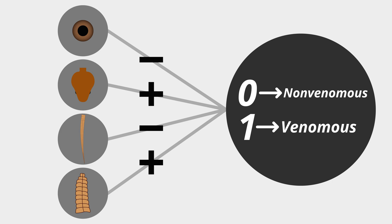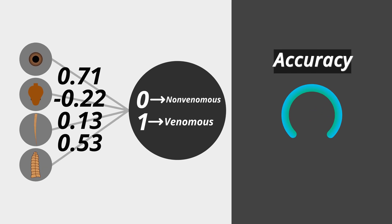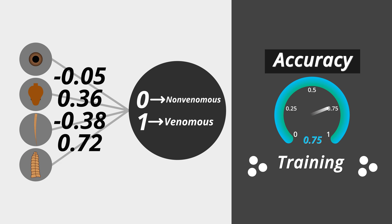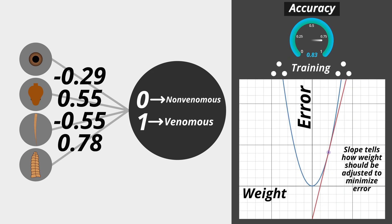While we manually assigned the weights, they would actually be set to random values and would gradually be adjusted by the neural network to make its predictions closer to the correct values. This process, called training, is carried out with the help of derivatives, which tell the neural network how the weights should be adjusted.